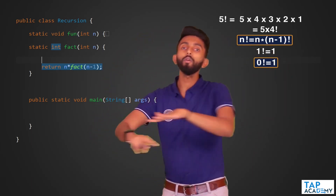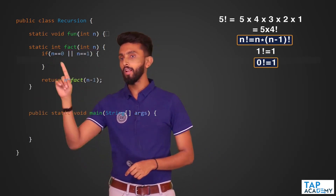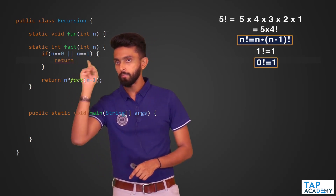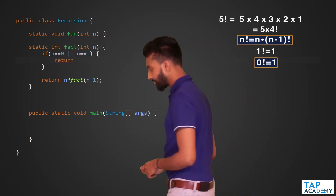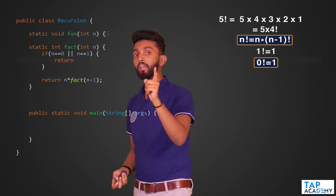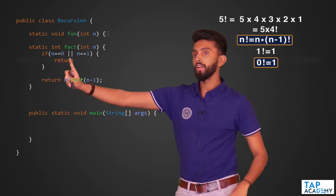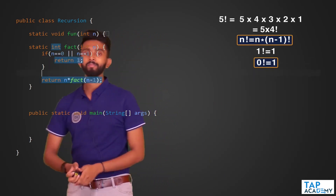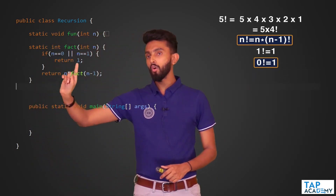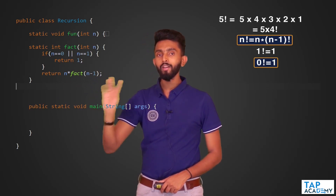The base condition is when n becomes 1 or n becomes 0 — return 1. So in code: if n == 0 or n == 1, return 1. This is my base condition. Factorial of 0 is 1, factorial of 1 is 1. For all other factorials it is n × factorial(n−1).